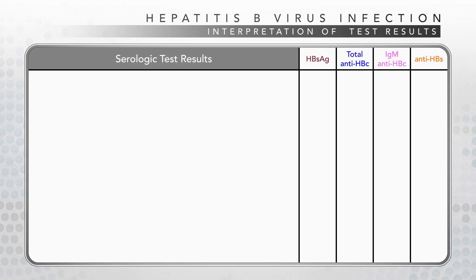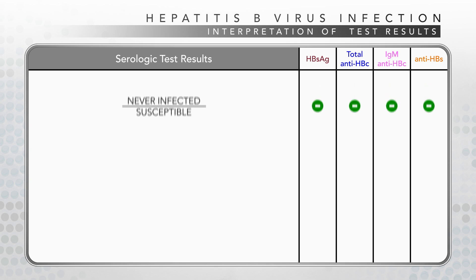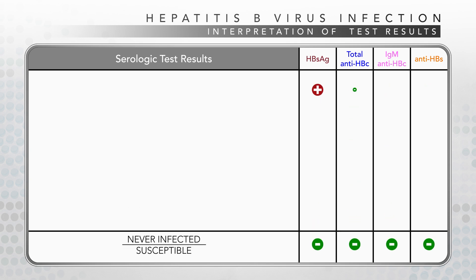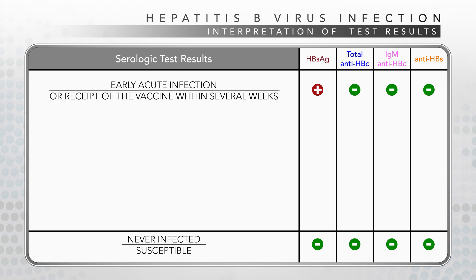This table summarizes the interpretation of serologic test results for HBV infection. Negative results for hepatitis B surface antigen, HBsAg, total antibody to hepatitis B core antigen, total anti-HBc, IgM anti-HBc, and antibody to hepatitis B surface antigen, anti-HBs, should be interpreted as never infected and therefore susceptible. Positive HBsAg with the other three tests being negative indicates early acute infection, but could also indicate receipt of the vaccine within several weeks — this is a transient effect.